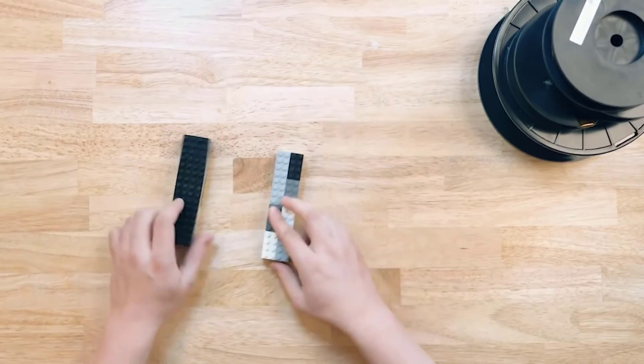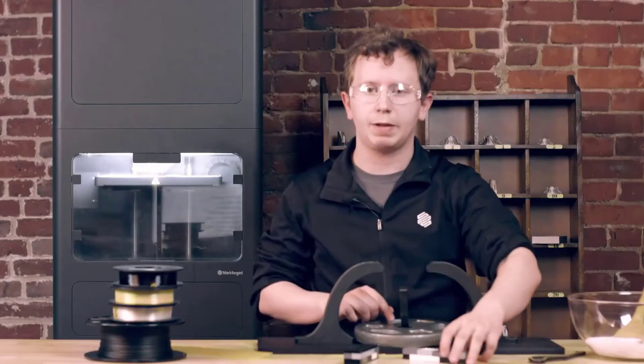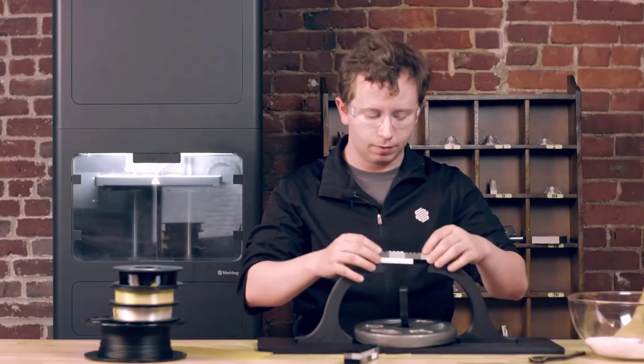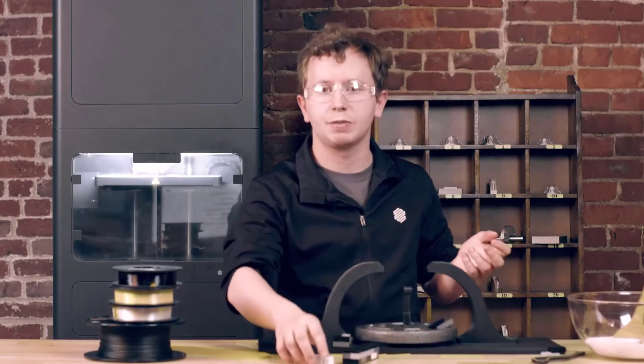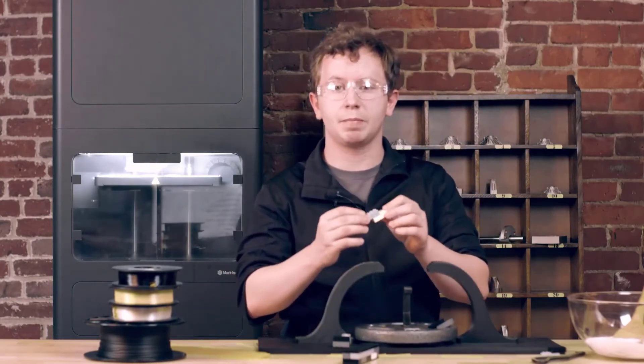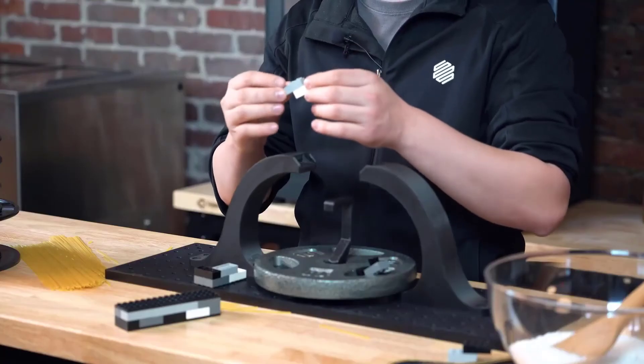So when we apply a load to a chopped fiber part, it breaks at the connection points, which when applied to printing composites is just the thermoplastic holding it all together.